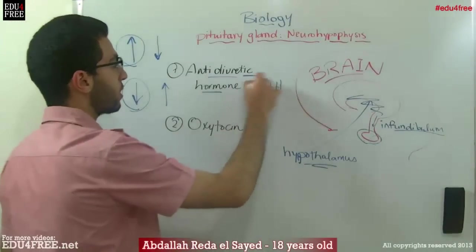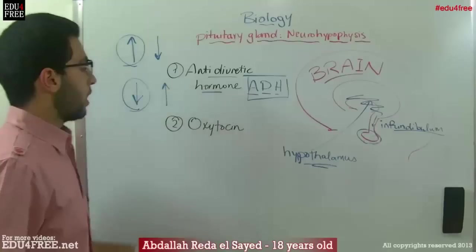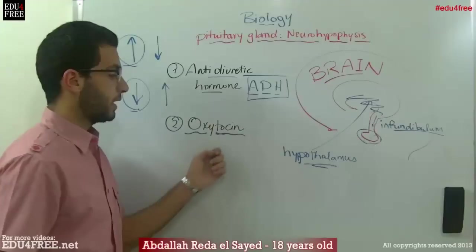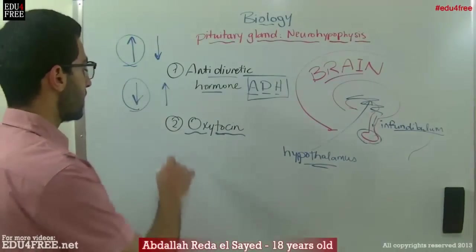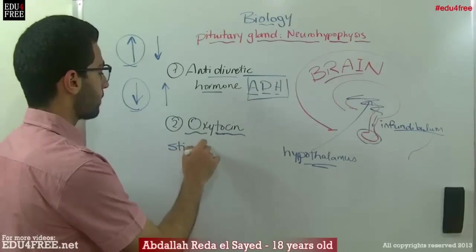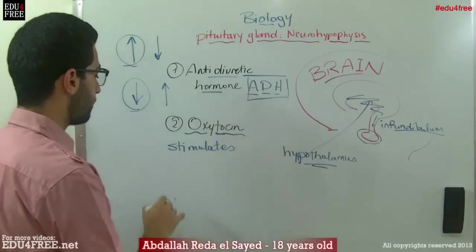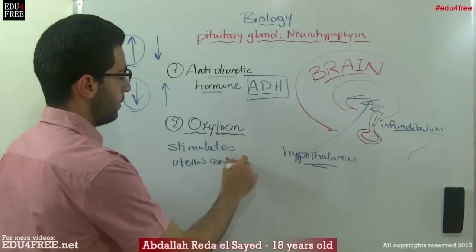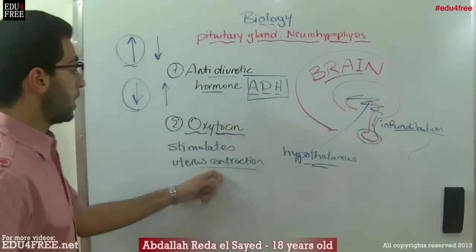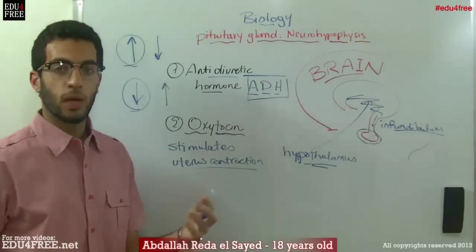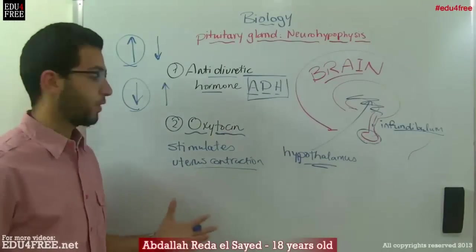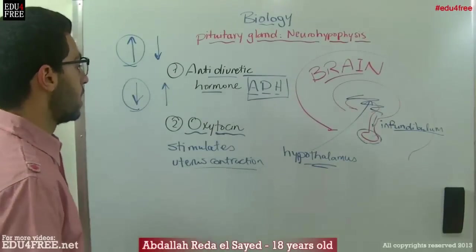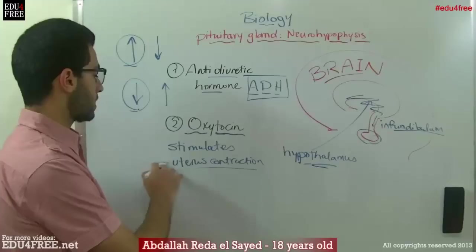So this is the function of the antidiuretic hormone. The second hormone is called oxytocin. This one stimulates uterus contractions during labor, during giving birth. So it is used artificially by gynecologists during birth operations in order to facilitate the labor process, and it stimulates the uterus contractions.